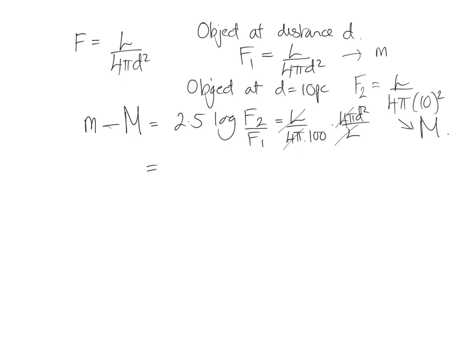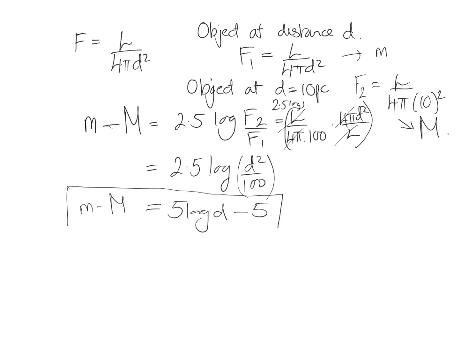And we're left with, ha, I forgot the 2.5 log, sorry. 2.5 times the log of all of that. And so then we're left with 2.5 times the log d squared over 100. And if you do a bit of log rearrangement to simplify things, this will end up being 5 log d minus 5, which is a commonly remembered relationship between absolute and apparent magnitude and the distance in parsecs.